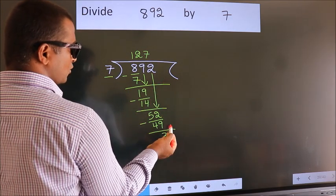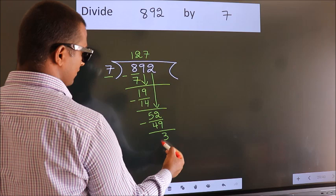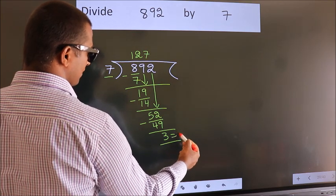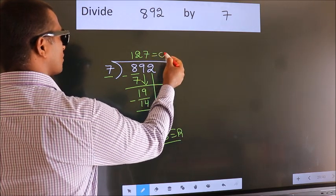No more numbers to bring it down. So we stop here. This is our remainder. This is our quotient.